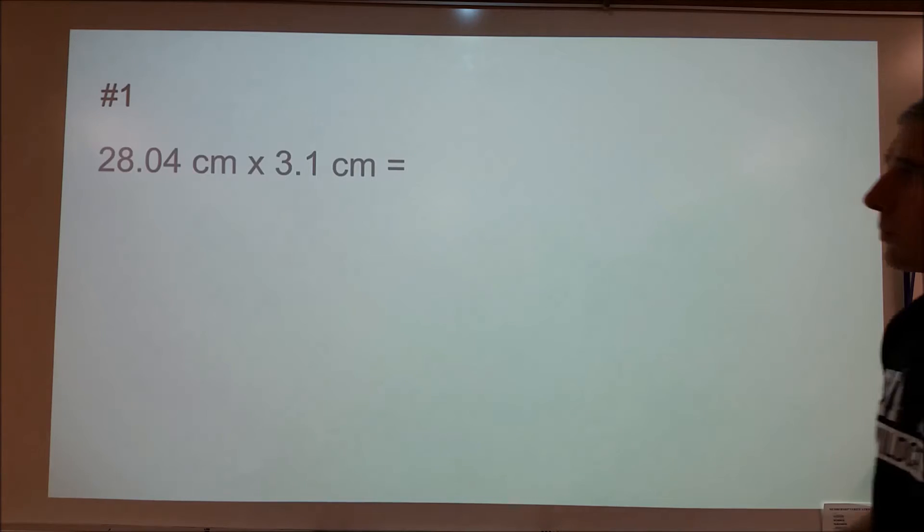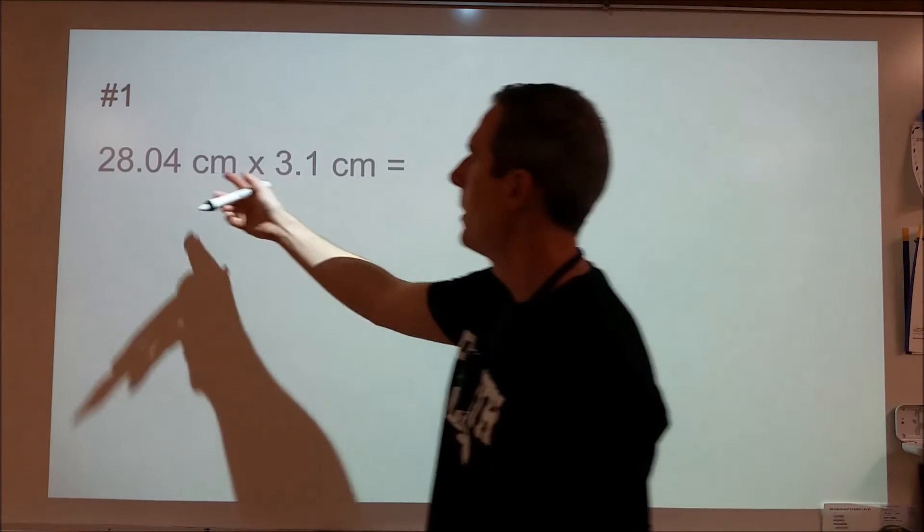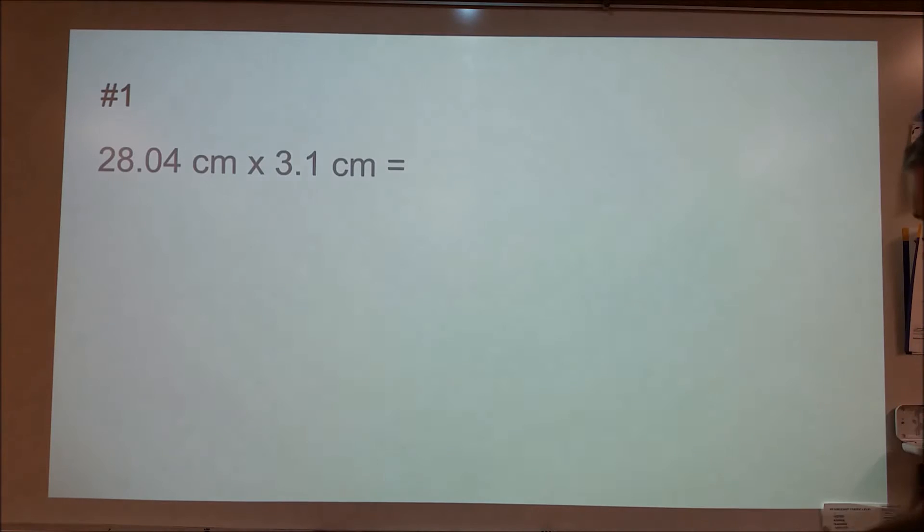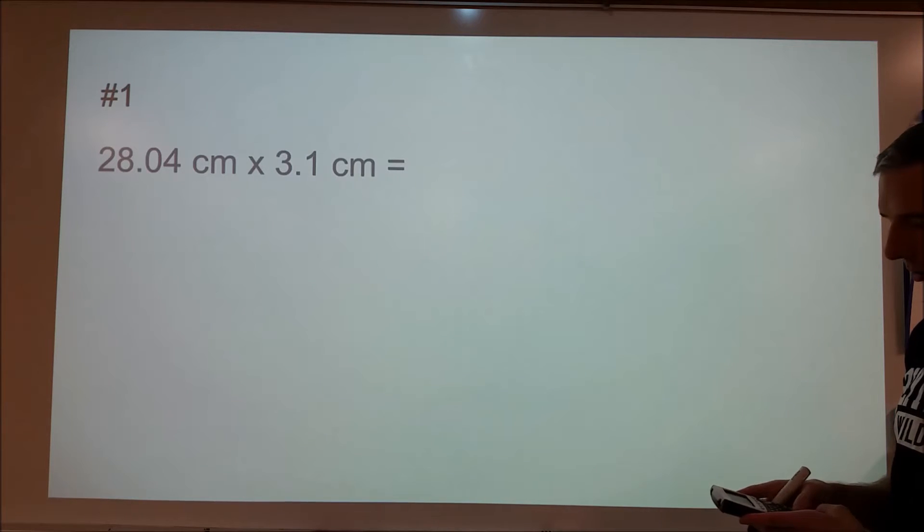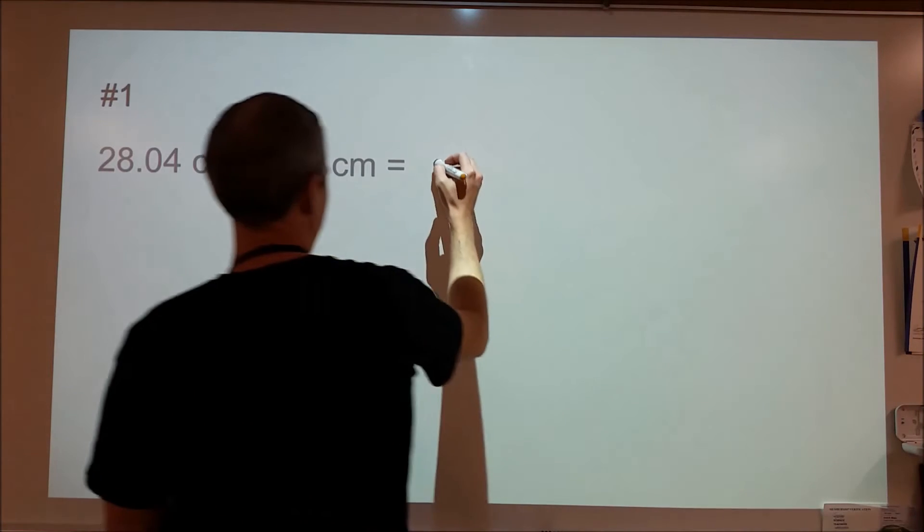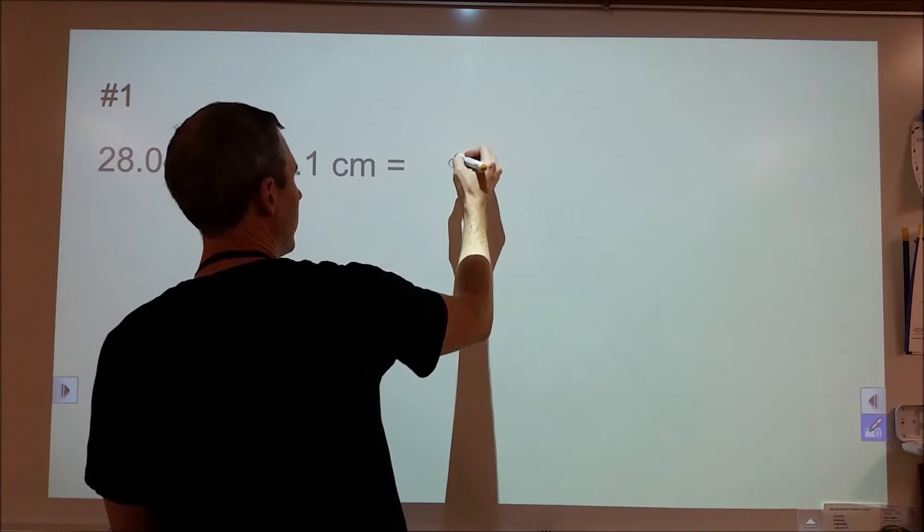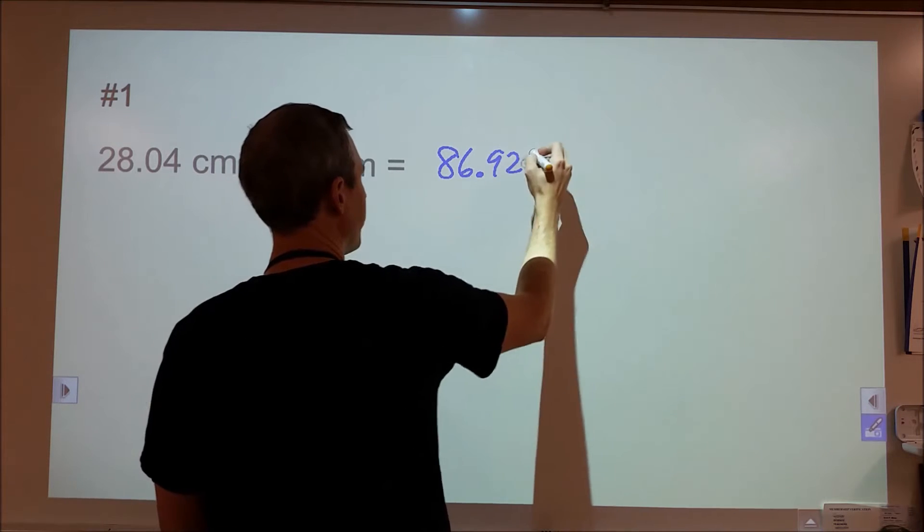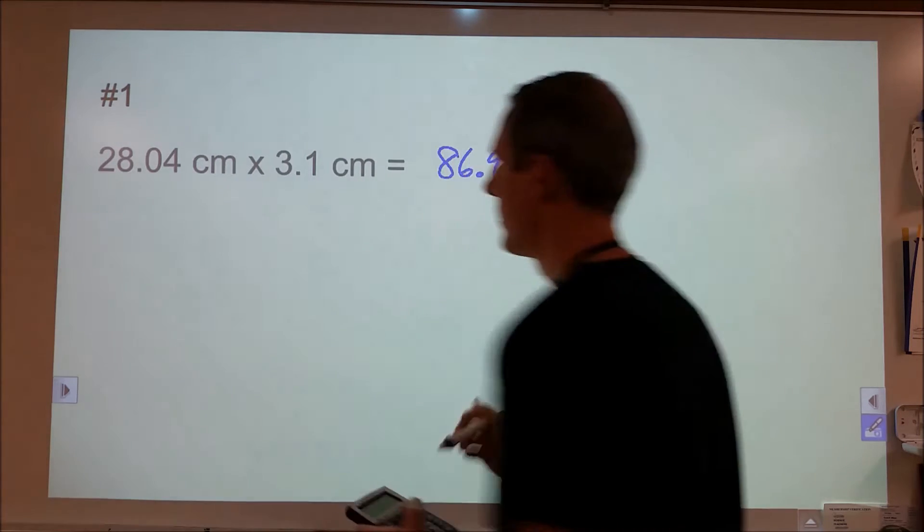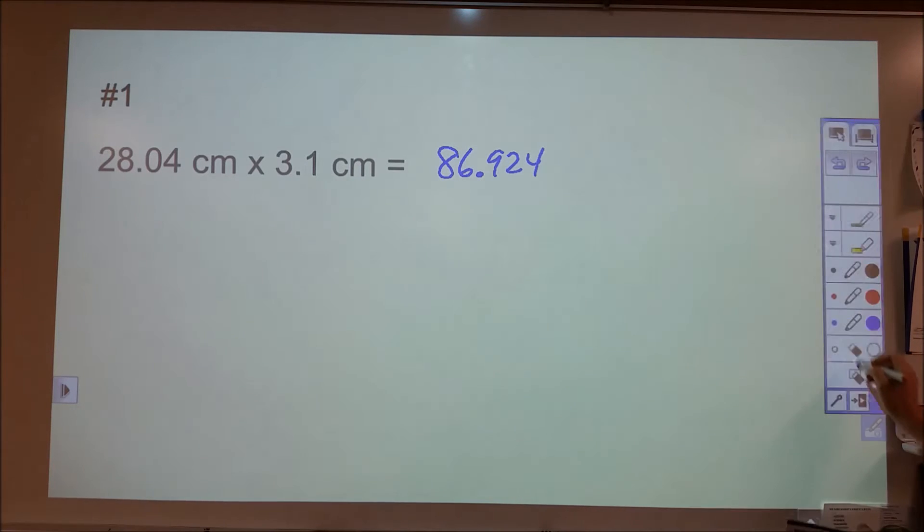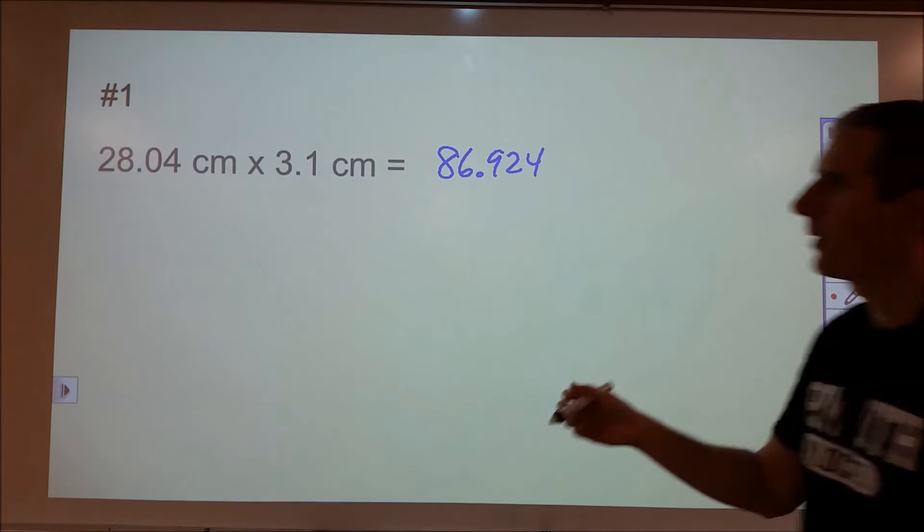There's two steps to these problems. When you're doing a measurement times a measurement or a measurement plus a measurement, like you would do in a math class, you're going to take 28.04 and multiply by 3.1 and your calculator is going to give you some answers. The second thing you want to do is then apply the rules into how you want to round that so that you properly reflect your measurements.